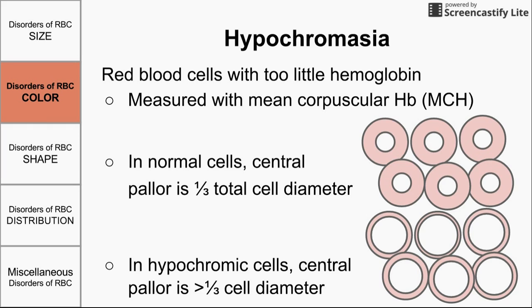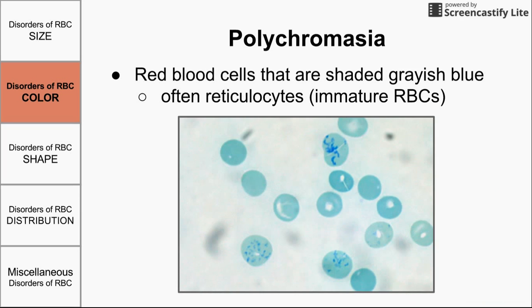When the pallor is larger than one-third of the cell diameter, we call those hypochromatic cells — hypochromasia. Hypochromasia means too little color and describes red blood cells that have too little hemoglobin. It's measured with mean corpuscular hemoglobin. On a real blood smear, these cells would look the same size but have a larger white region inside — less reddish-pink than normal red blood cells.